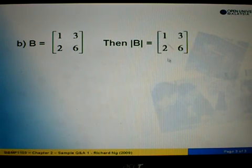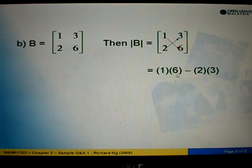Let's look at the second example. B = [[1,3],[2,6]]. To find the determinant of B, we cross-multiply 1, 6, and 2, 3, then subtract. We take 1 times 6 minus 2 times 3. So 1 times 6 equals 6, and 2 times 3 equals 6. Therefore, 6 minus 6 equals 0.